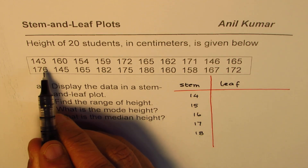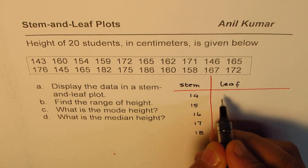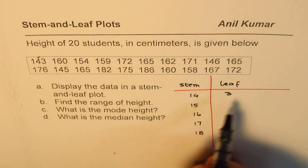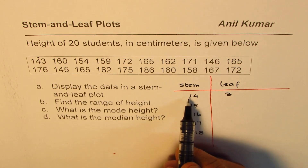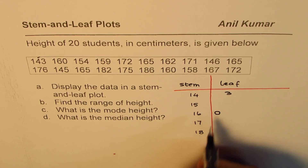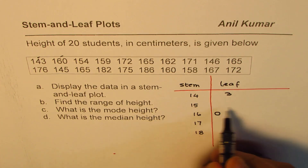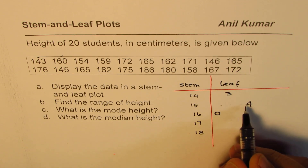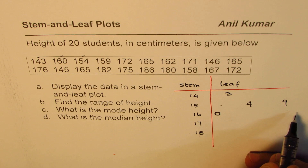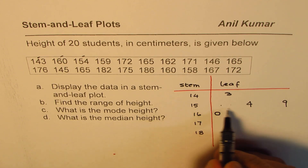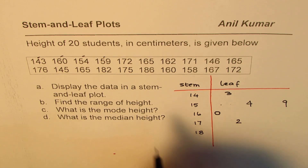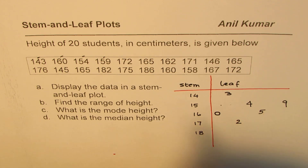When writing the leaf values, we should arrange them in increasing order. So for 143, I'll write 3 leaving space for 0, 1, 2 if any. For 160 the leaf is 0. For 154, I'm writing 4 slightly away because there could be numbers to its left. For 159, I write 9 almost at the end of the row. Next is 165, then 162.